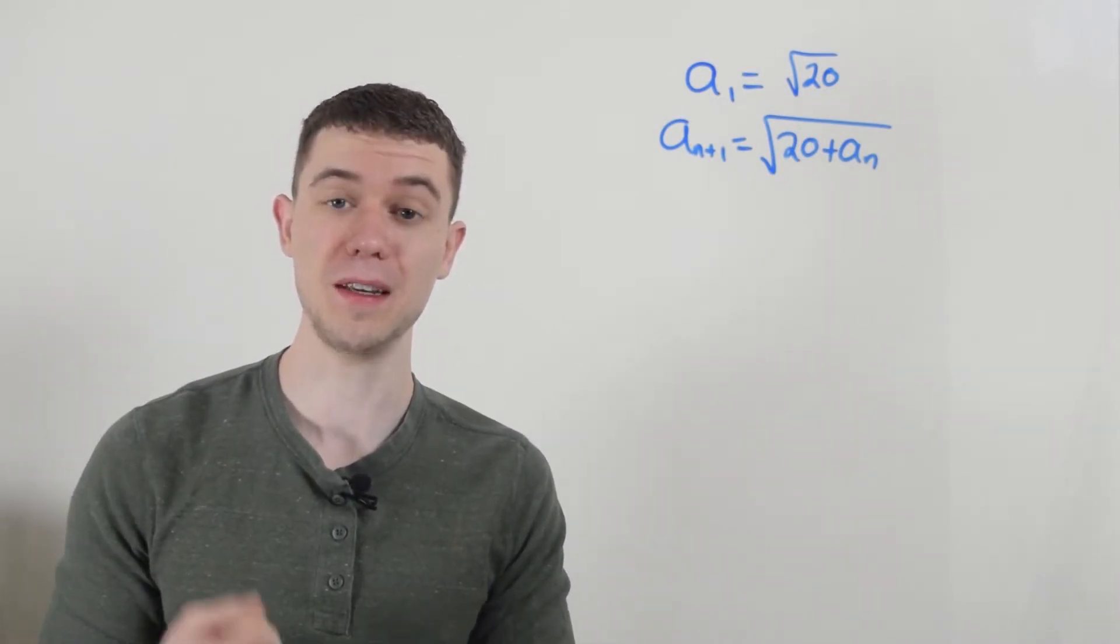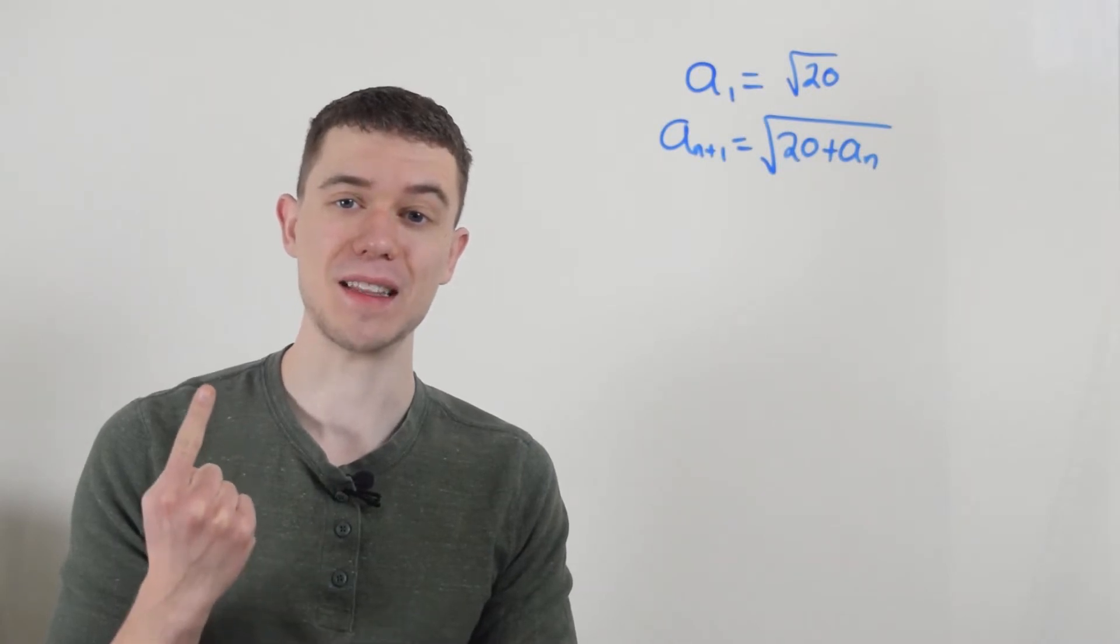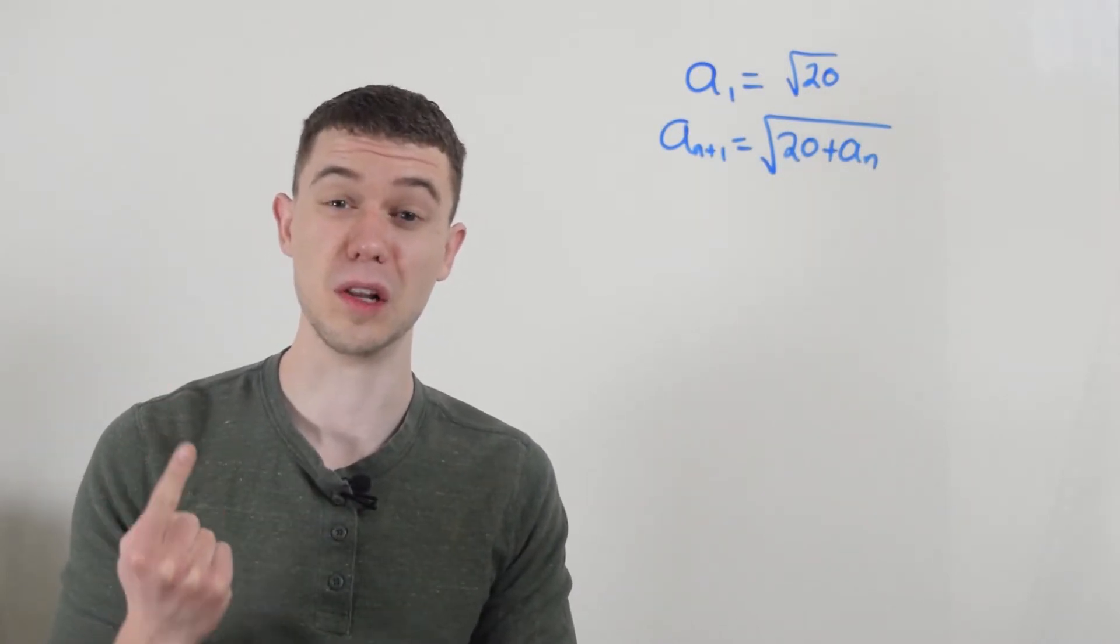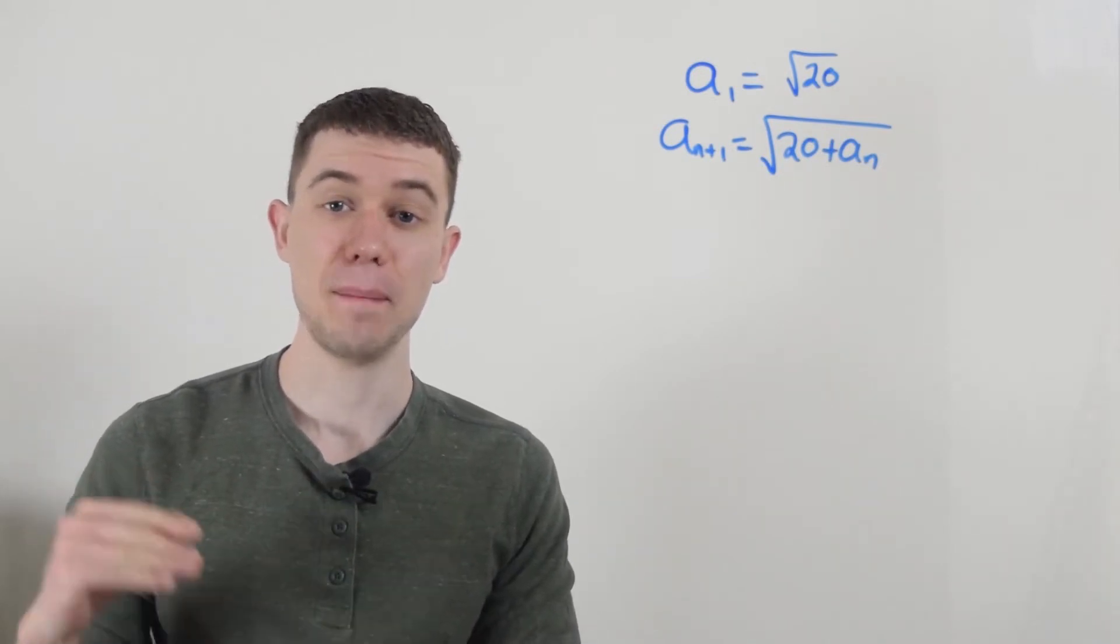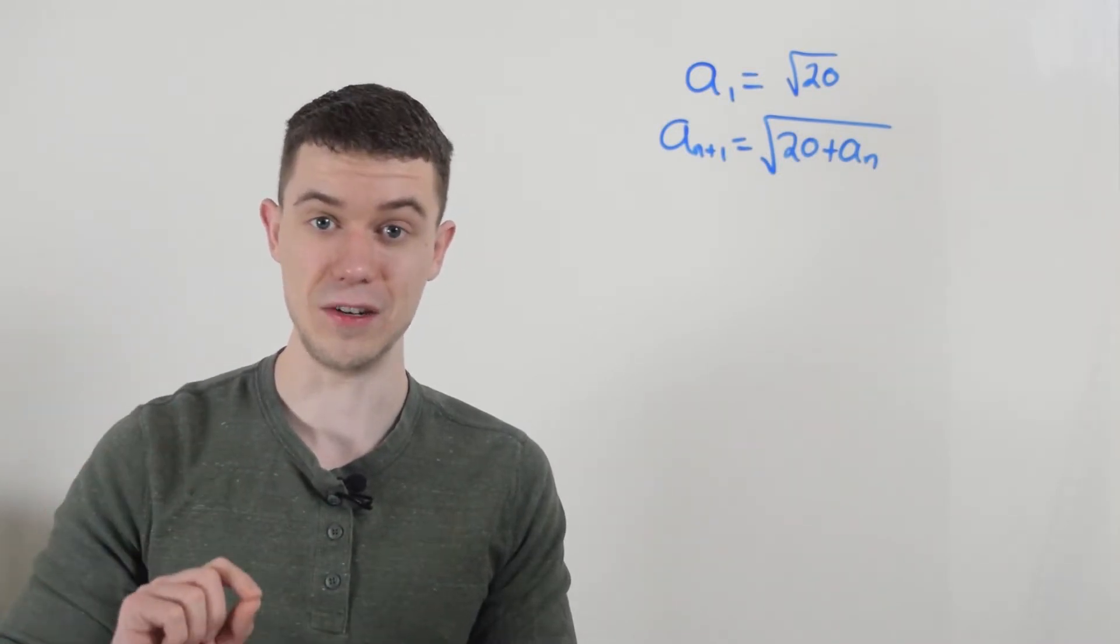So what do those two things mean? Bounded means that the sequence never exceeds an upper bound or a lower bound. So we really only care about bounded on one side. Basically, if a sequence is monotonic, that means it's always increasing or always decreasing.